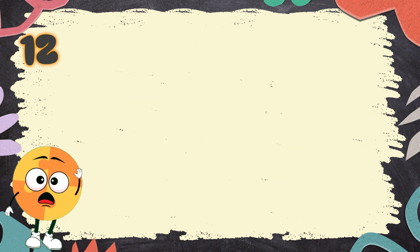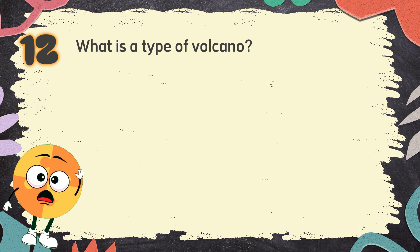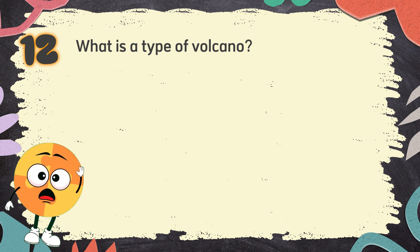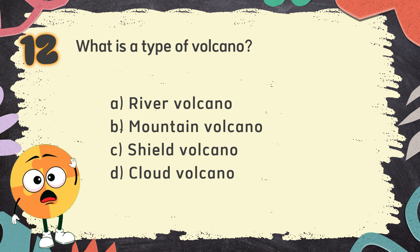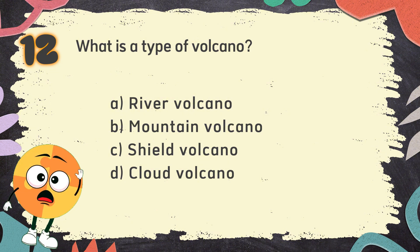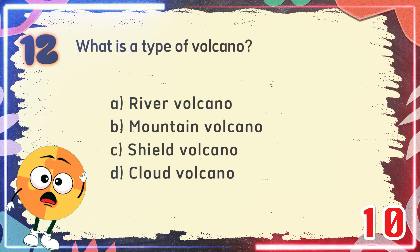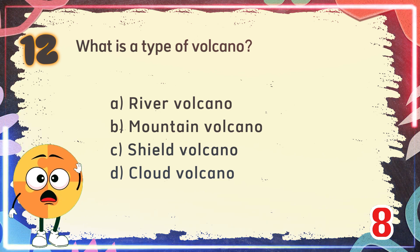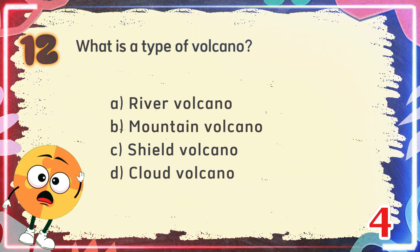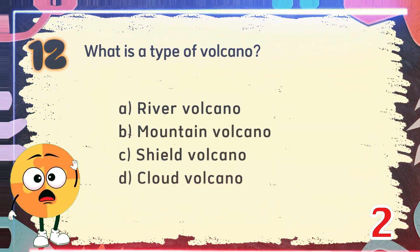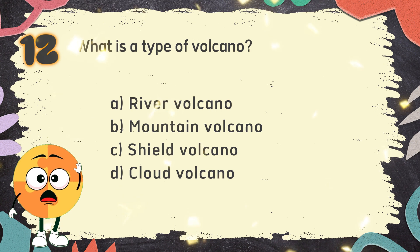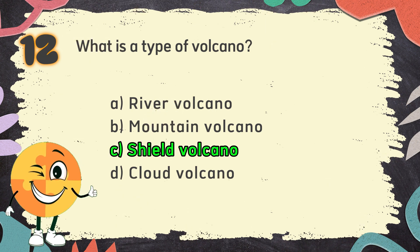Number 12. What is a type of volcano? The choices are: A. River volcano, B. Mountain volcano, C. Shield volcano, D. Cloud volcano. The correct answer is C. Shield volcano.